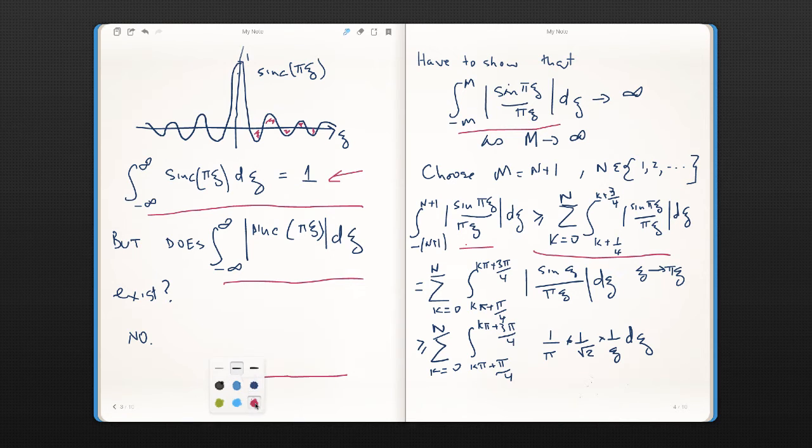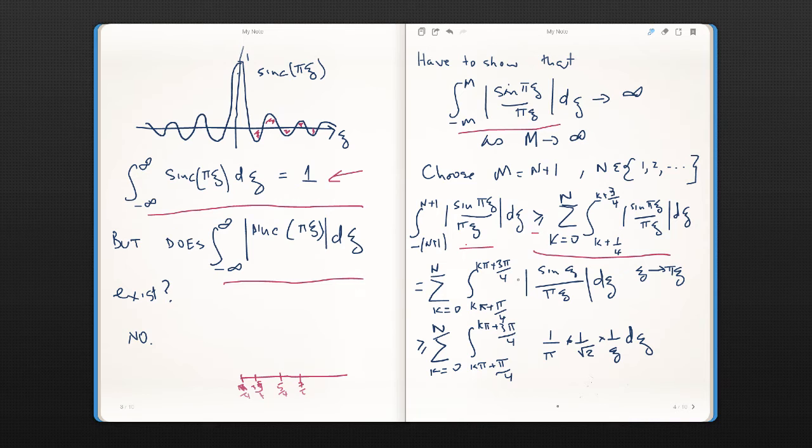And what we're doing here is we're just simply taking bits of the domain of integration with gaps. So we go from π/4 there, 3π/4, and then there's a gap, and then we start at 5/4 and it goes to 7/4. And then we start at 9/4, and then we go to 11/4, et cetera. So clearly this line here holds.